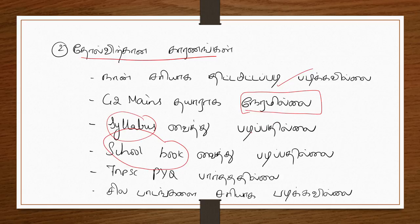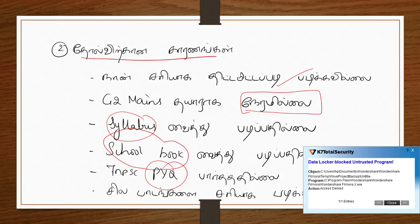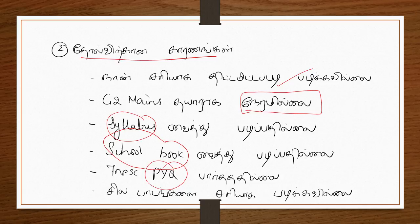If you learn the syllabus, you will understand the subject. TNPSC previous questions — this is a sample of 10 question papers. If you refer to a question, one question has 10 questions. That means one question is indirect. Indirect means that it is a repeat topic, so you can learn extra content.